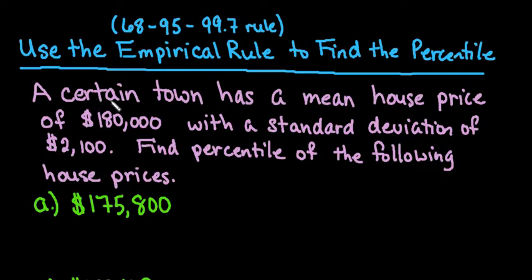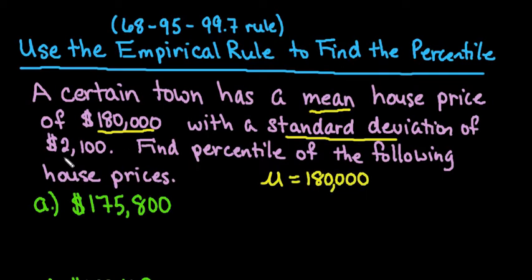What we have is a certain town has a mean house price of $180,000 with a standard deviation of $2,100. That's important information that we need to pull from the problem. So we would say that mu, the mean, is $180,000, and the standard deviation sigma is $2,100.